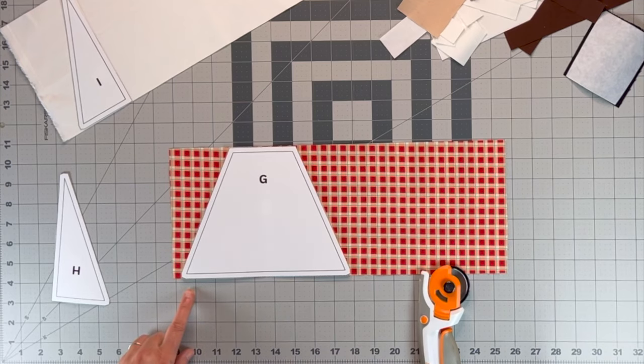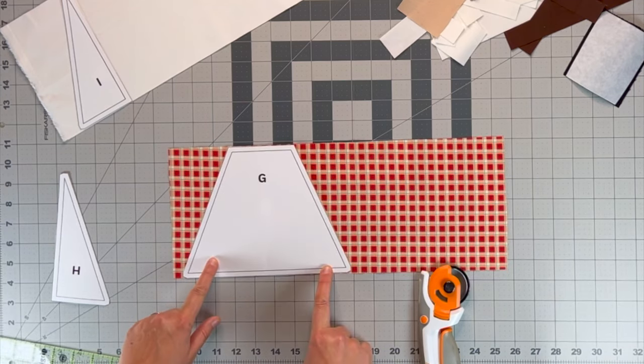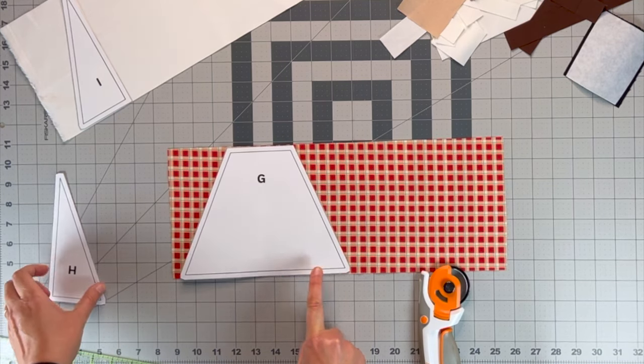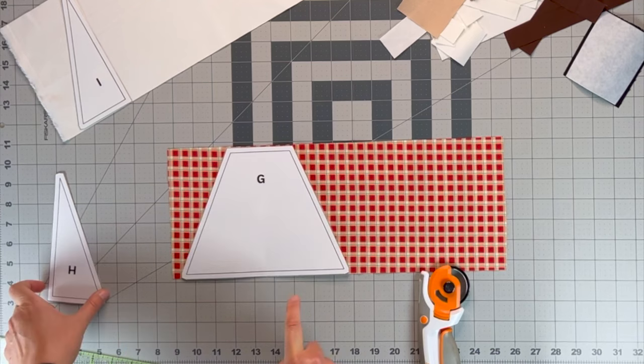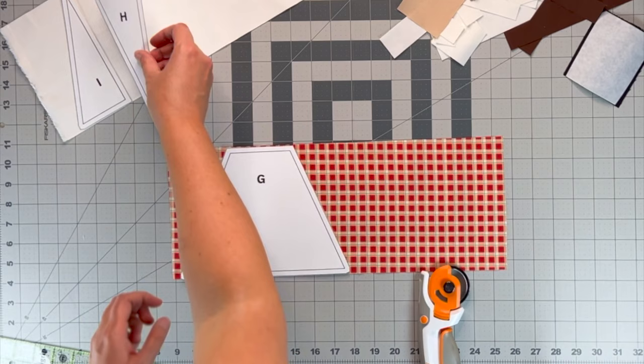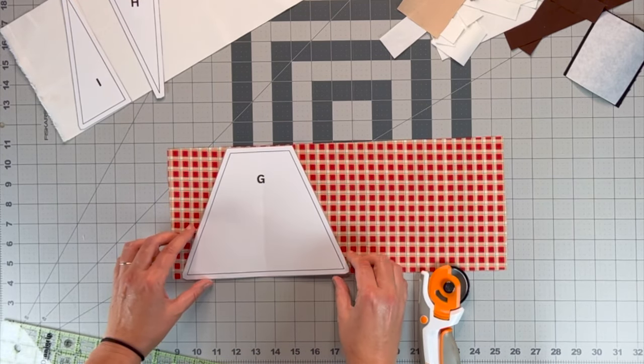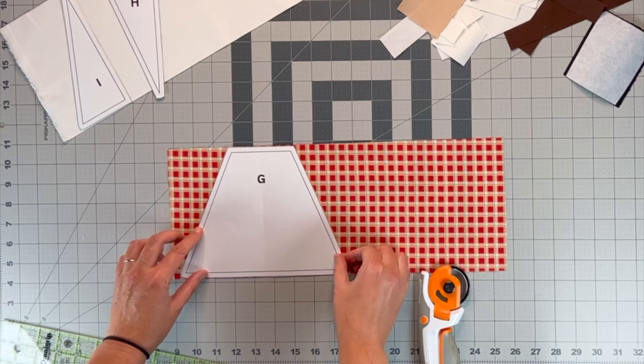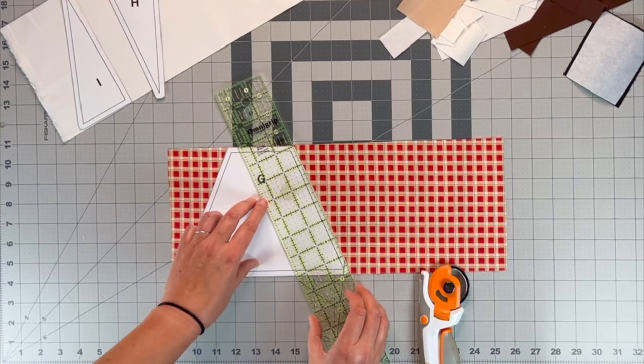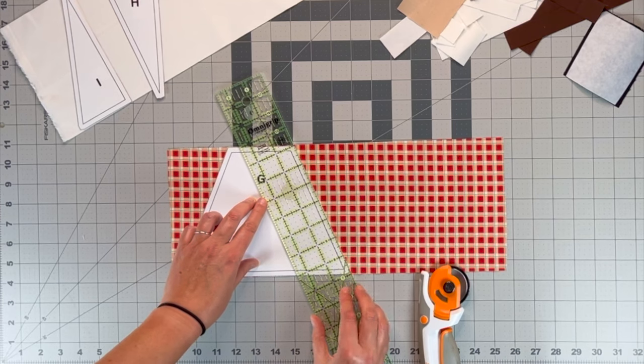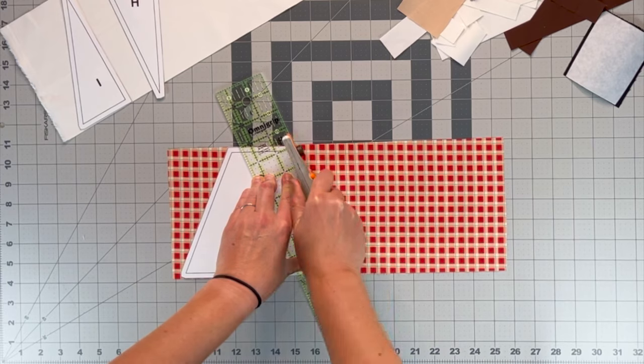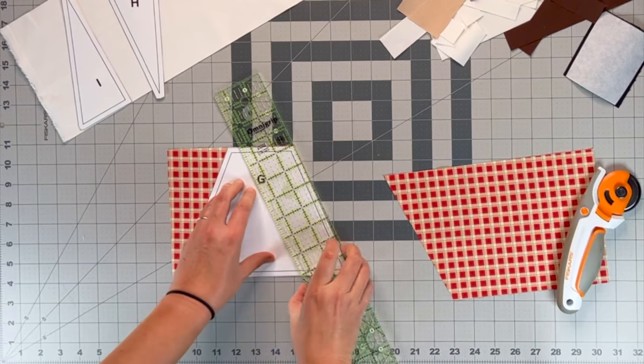The angel skirt has templates that are provided in the pattern. There is the skirt, and then there are background pieces that go on either side that are cut from your background fabric. So in order to cut these out, it's easier if you use a ruler to do it because it just protects the template and it makes it easier to cut.